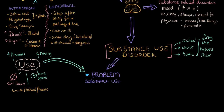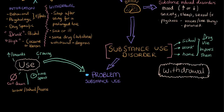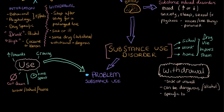A second factor we look at, apart from use, is the presence of withdrawal. This happens after you stop using the drug after prolonged or sustained use. You can feel pretty sick or unwell, with different symptoms depending on whatever drug you're using. This really suggests that physiologically your body is dependent on the drug. Withdrawal can be dangerous — for example, with alcohol withdrawal you can potentially get seizures and die. Withdrawal symptoms are specific to the substance, and the presence of withdrawal suggests that you have a problem.